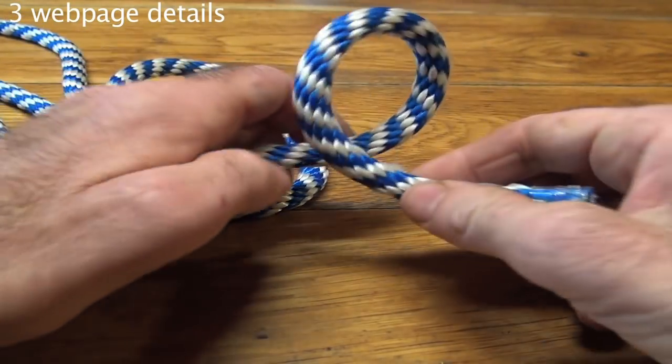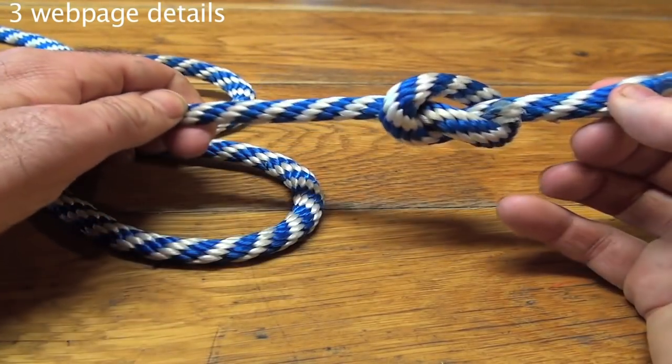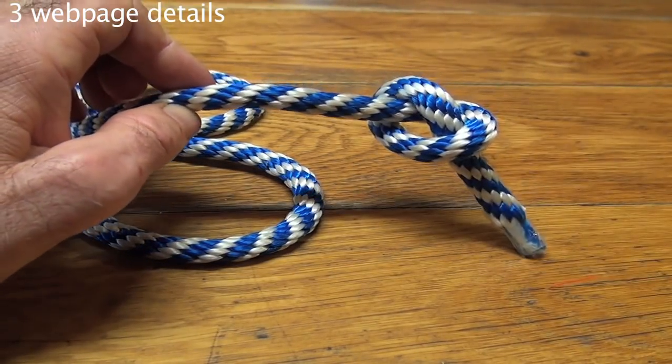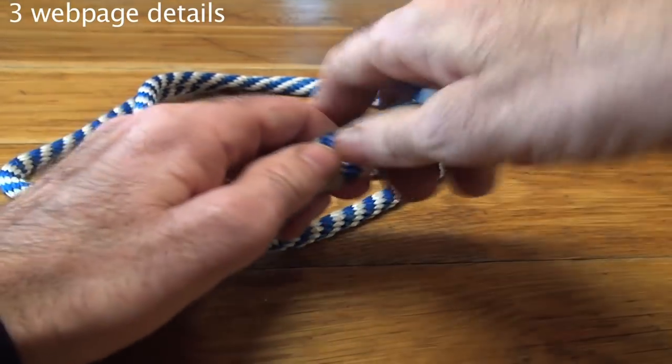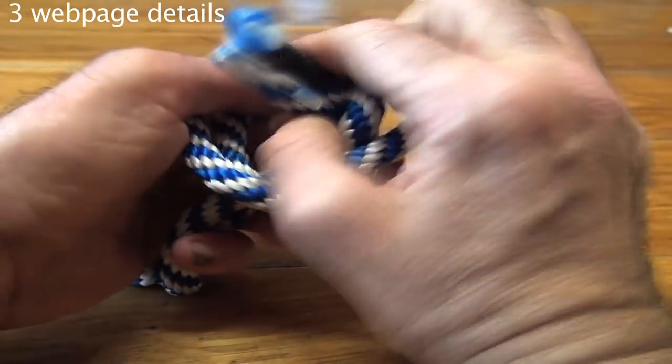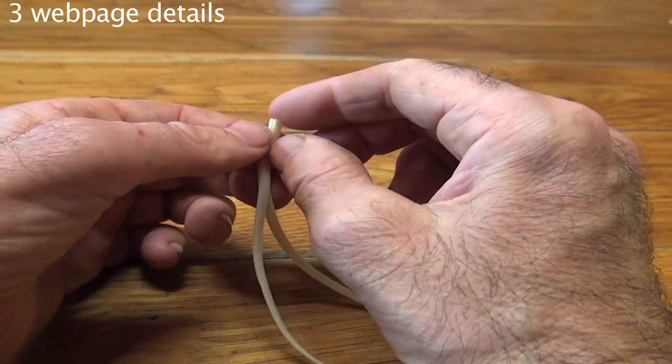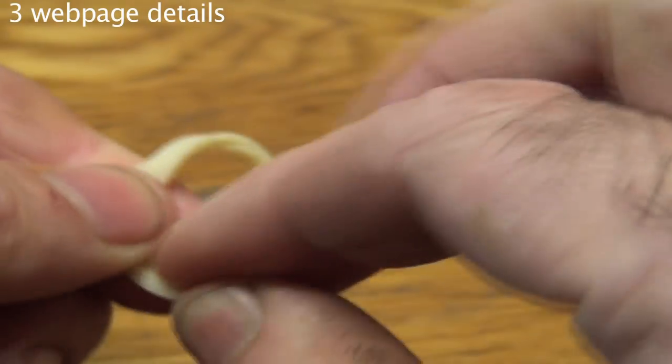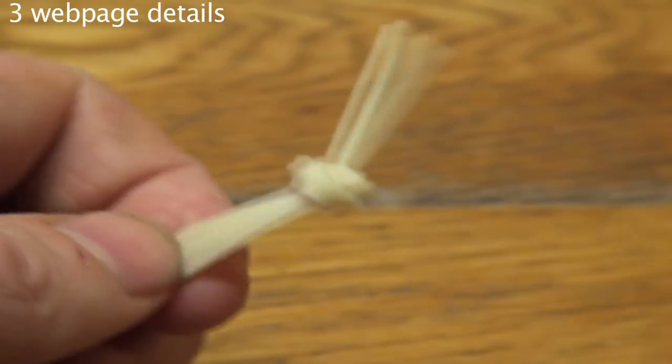Tying is easy but confusing the first time. The overhand is the simplest knot there is. Just make a loop and put the end through. But we put two ends together and treat them like one strand. So here it goes. Rubber band ends together. Loop ends through.